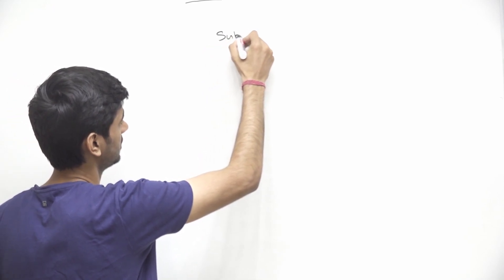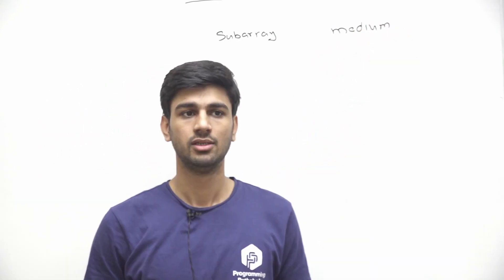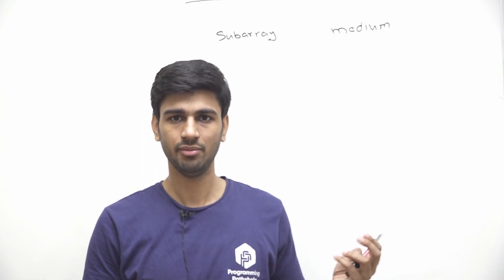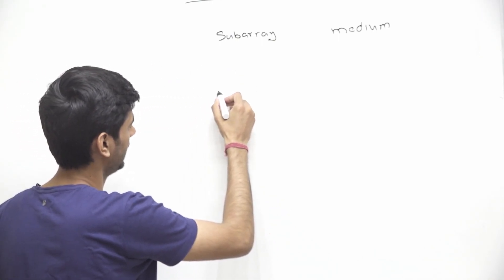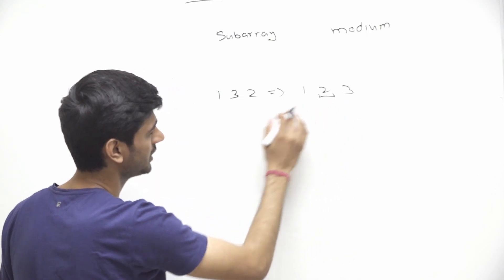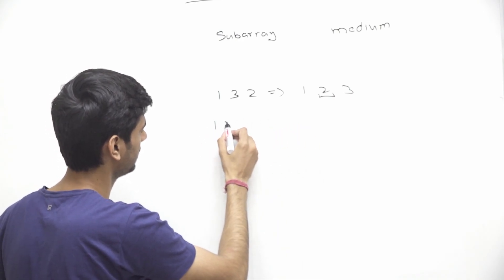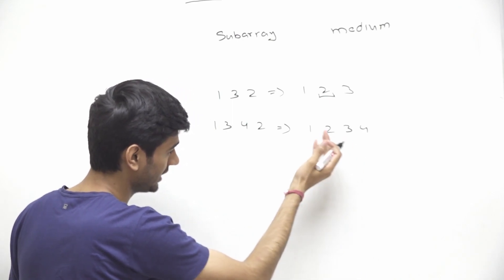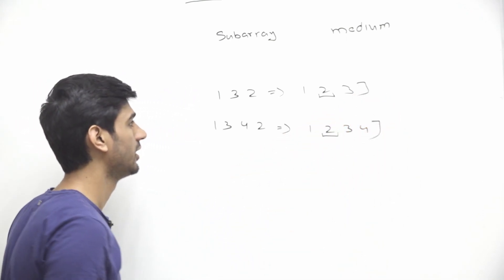There are two key terms: subarray and median. Median is the middle element when data is sorted. If the length is odd, the middle element is the median; if even, the left middle element is the median. For example, [1,3,2] sorts to [1,2,3] — median is 2. For [1,3,4,2], sorted is [1,2,3,4] — two middle elements are 2 and 3, so the left middle, 2, is the median.